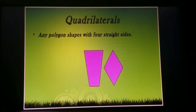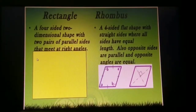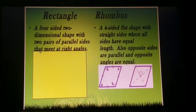Now polygons. Two-dimensional shapes that have sides made from straight lines are called polygons. A quadrilateral is any polygon shape with four straight-line sides. It is called a quadrilateral. Now rectangle and rhombus: a rectangle is a four-sided two-dimensional shape with two pairs of parallel sides that meet at right angles.